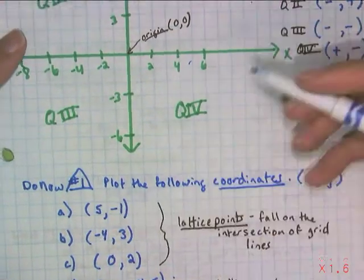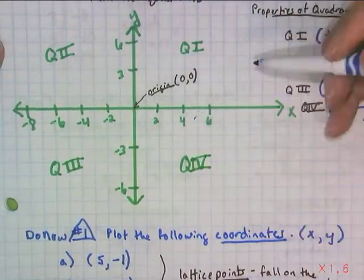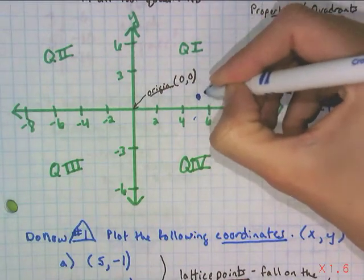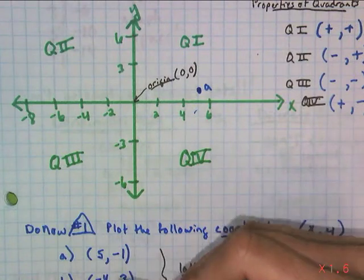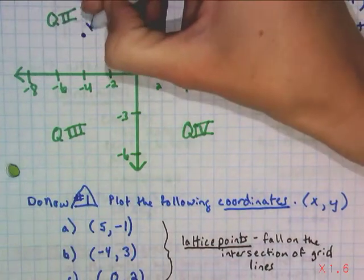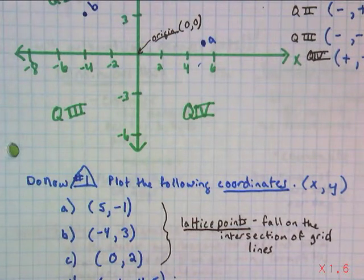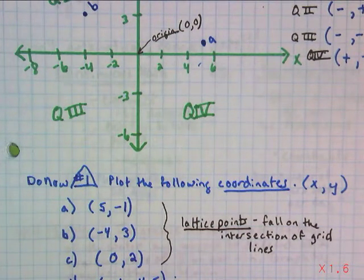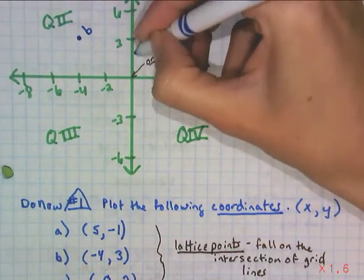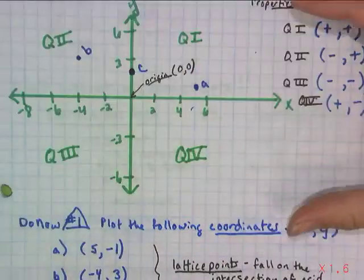So for point A, which is (5, -1), we get there by going 5 to the right and 1 down. Notice that the scale is slightly different on my axes. I just labeled different reference points, which is fine. So I'm going to plot it here and we'll call it point A. Point B is (-4, 3). So we go 4 left and then 3 up. We're going to call that point B, which is in quadrant 2. C is not in a quadrant. It's actually on an axis because one of its coordinates is 0. So I don't go left or right, but I do go 2 up.